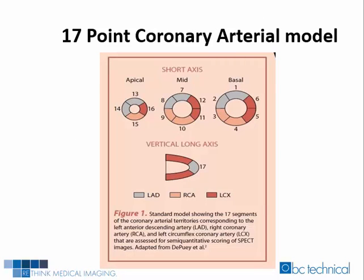To understand semi-quantitative scores obtained with SPECT imaging, it is necessary to first become familiar with the coronary arterial model used. Semi-quantitative scoring was initially based on a 20-segment model, which was used before the current 17-segment model was introduced and adopted as the standard. The 17-segment model includes four segments from the apical slice, six segments from the mid and basal slices short axis, and one segment from the vertical long axis slice.